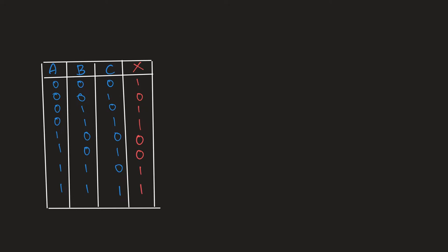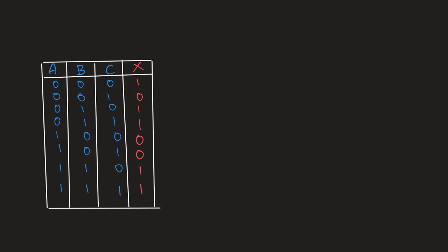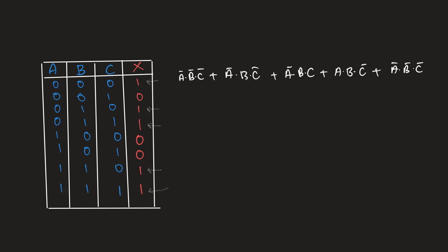Let's take an example. Traditionally, we look at a table and write all the combinations for the inputs that gave us output ones. For example, for A-not, B-not, C-not we have X equal to 1, and similarly for A-not, B, C-not and A-not dot B dot C and A B C-not plus A-not B-not C-not. You realize this is a pretty lengthy way of writing an expression, and after this we'd have to even simplify it.